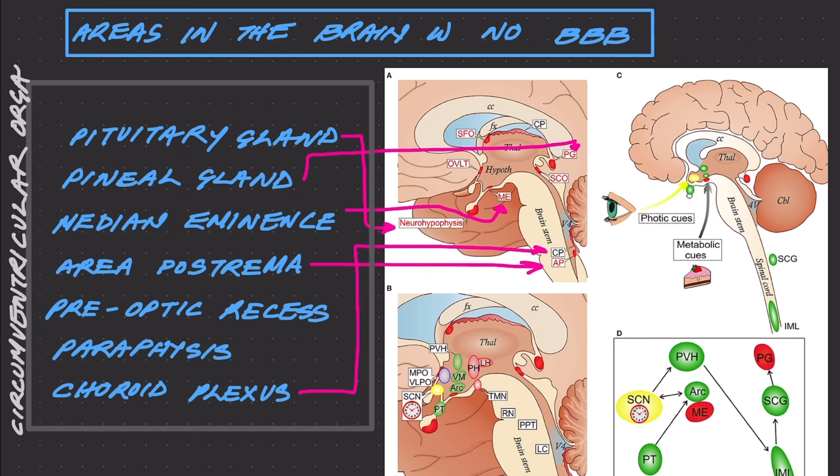And lastly, let's talk about some pathology of the blood-brain barrier. These would include stroke, infection, brain tumors, and brain surgery, just to name a few.